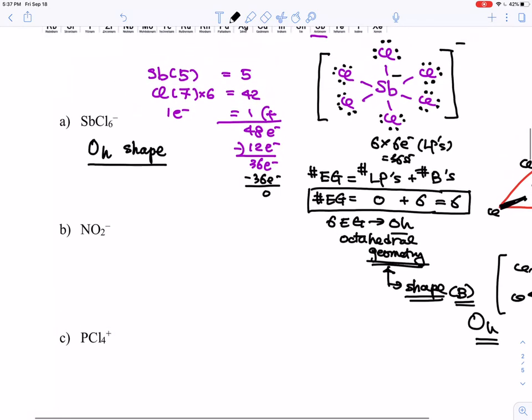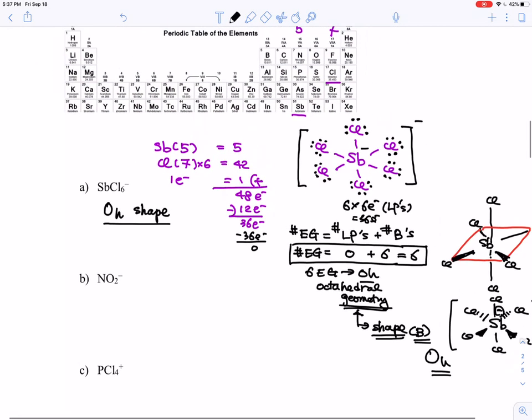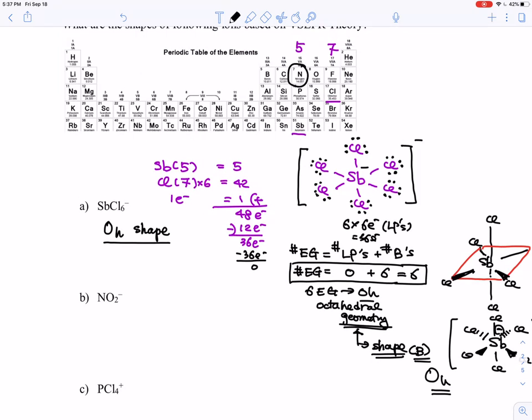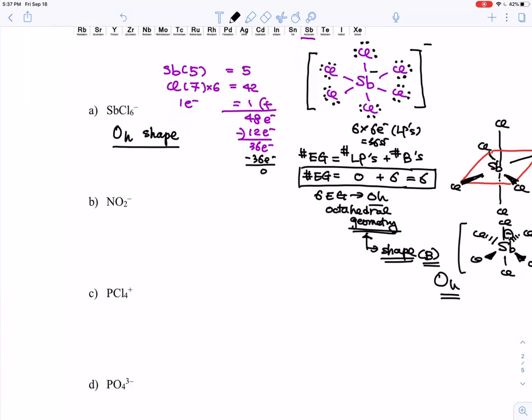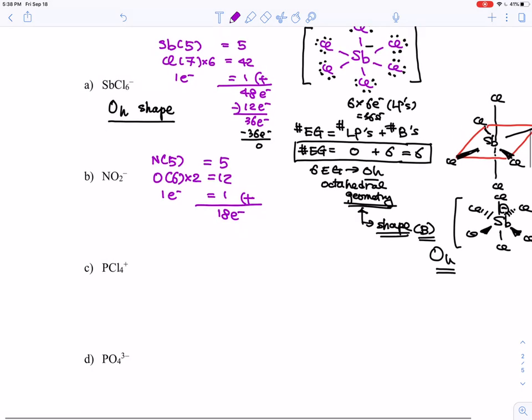What about the second one, which is NO2^-? So N is, you know, it's a 5. O is 6. So we just have to do the same thing as we normally do. Nitrogen is 5. Oxygen is 6. We only say electron. You have 1 electron extra, which is a negative charge. There are 2 of them. So that means 5. This is a 12. This means 1. You add them together. That makes you 18 electrons.